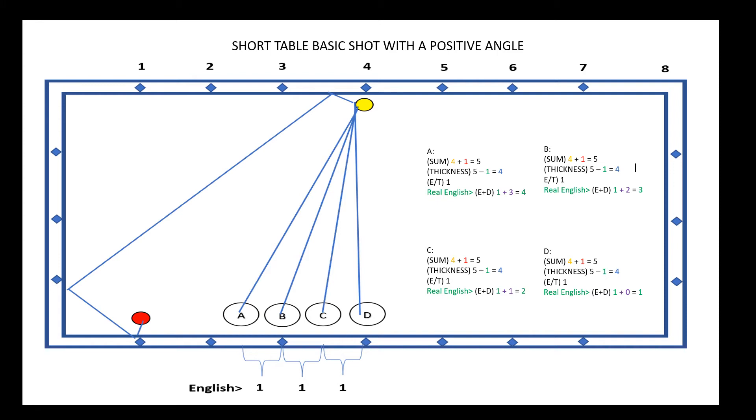For example, ball D is the starting point without an angle, so there is no need to increase the English, which keeps it at 1. For ball C, you will add 1 to your original English, giving you a real English of 2.